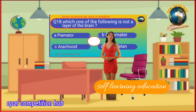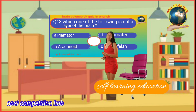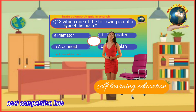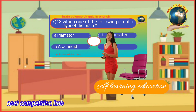Question number 18: Which one of the following is not a layer of the brain? Option A: Pia mater. Option B: Dura mater. Option C: Arachnoid. Option D: Diencephalon. Your time starts now. Your answer will be Option D: Diencephalon.